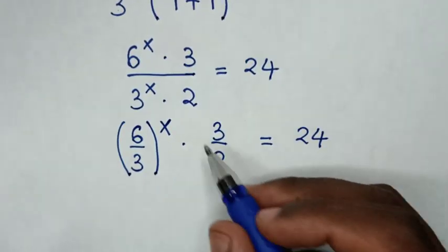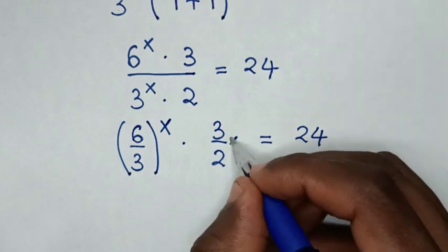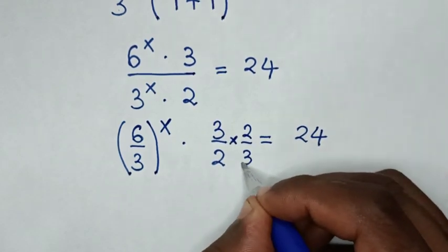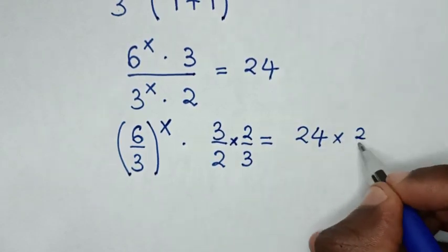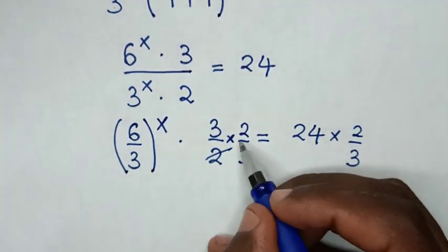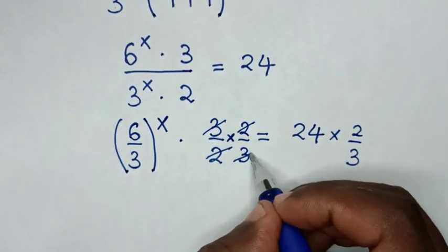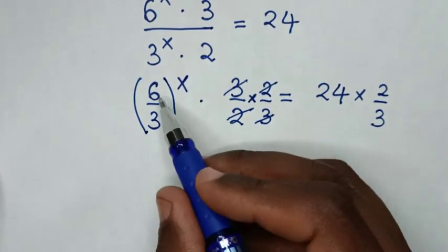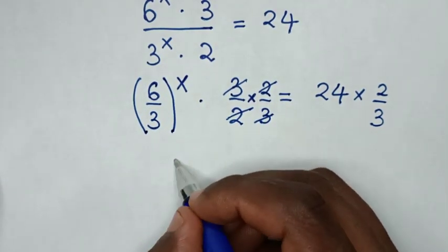Then to remove this fraction, we multiply by 2 over 3 on both sides. So this and this will cancel, this and this will cancel. Then it will be 6 over 3 is 2.